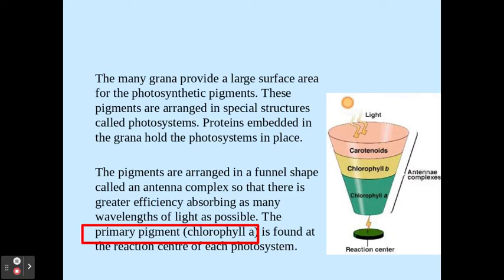Within these photosystems, we have pigments, and these pigments are arranged in a funnel shape called the antenna complex, which you can see within this image here. This is all to do with absorbing different wavelengths of light, and the primary pigment within the reaction centre is chlorophyll A, which we do need to be aware of.